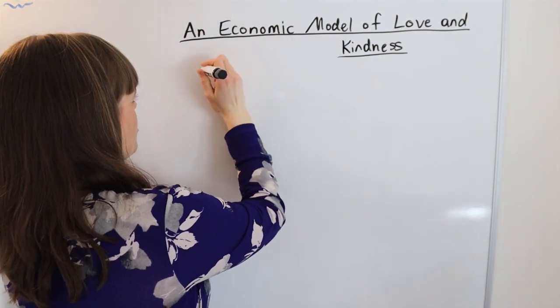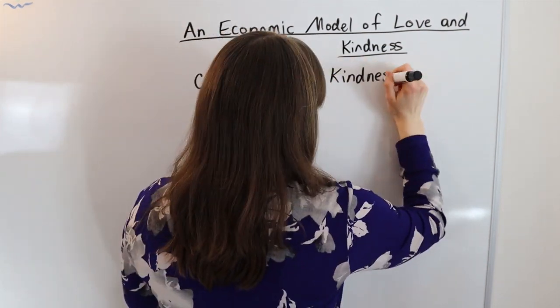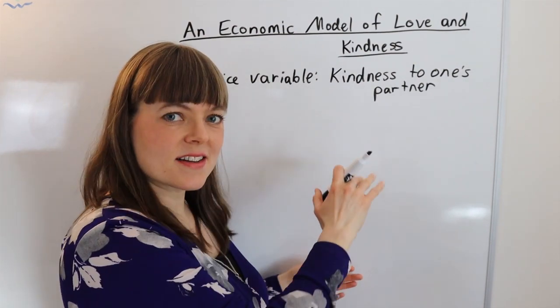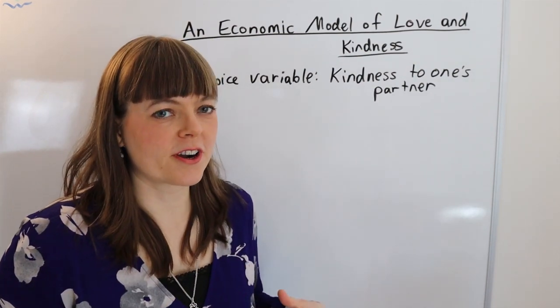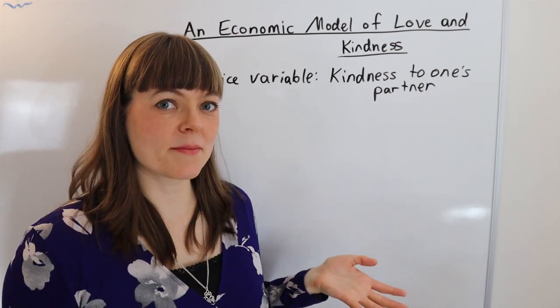So first step of course is what is the choice variable that we would like to model? And the choice variable I'm going to choose is your kindness to your partner. Like how frequently do you do random acts of kindness to them?